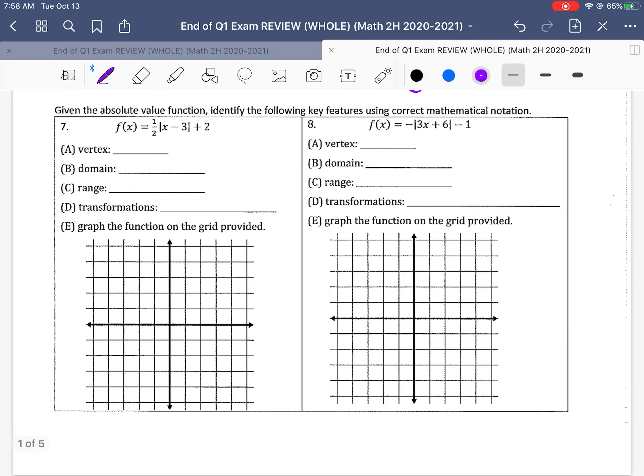Graphing absolute value functions. So number 7 says f of x is equal to 1 half x minus 3 plus 2. So if we're looking at this, the vertex again, remember, comes from those two shifts, the horizontal shift, the h and the k. And remember, the h is always opposite. So if I'm pulling out the vertex, this would be right 3 up 2. So we're sitting at the point 3, 2. The domain on every absolute value function is all real numbers or negative infinity to positive infinity.